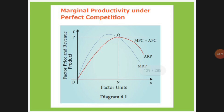Beyond point Q, expenses will be more and revenue will be less, so you won't produce more. You will stop producing at that point only and won't go beyond the Q point.